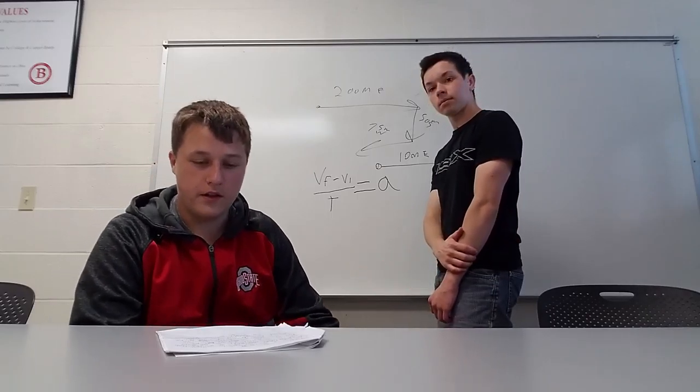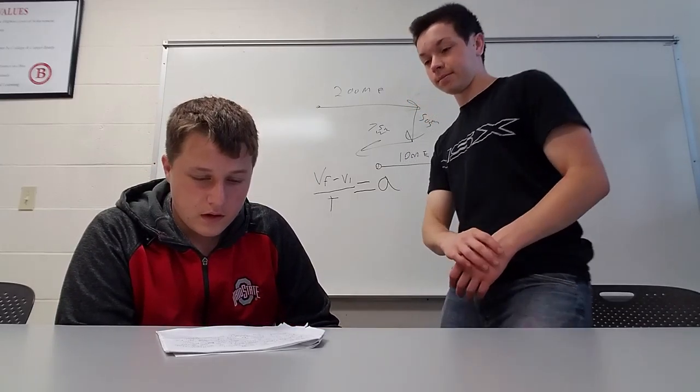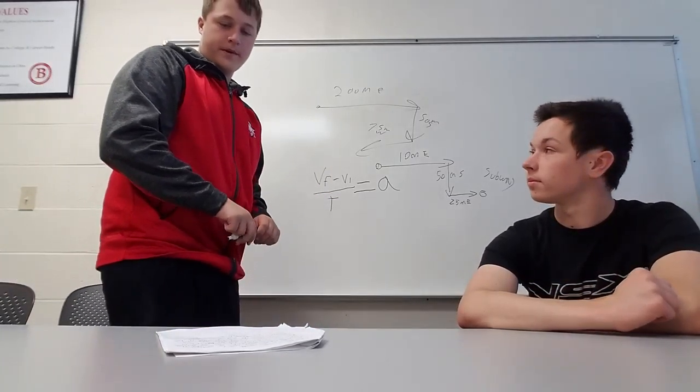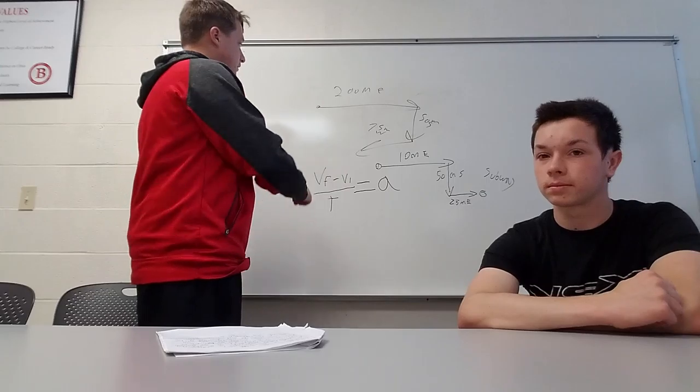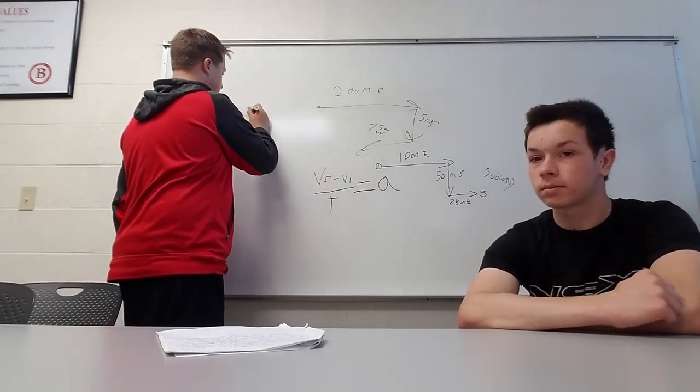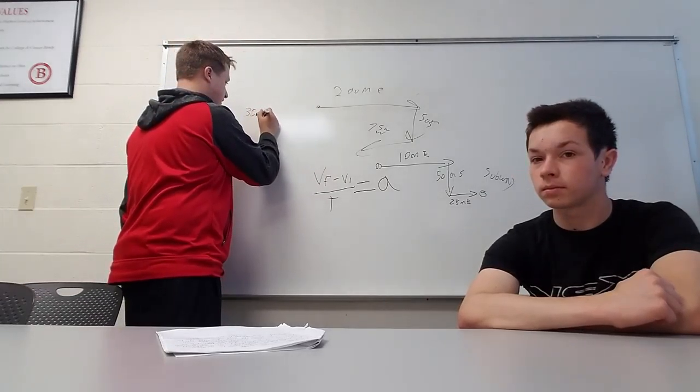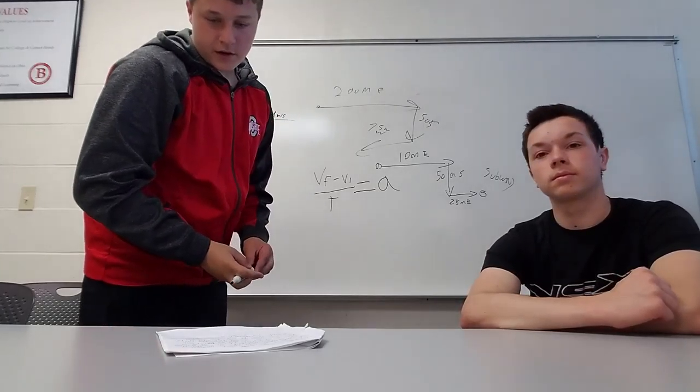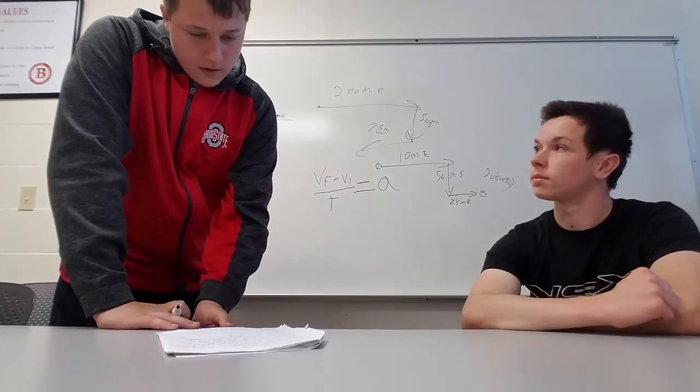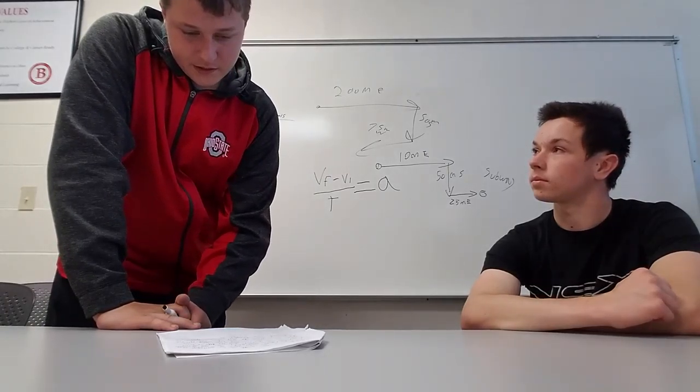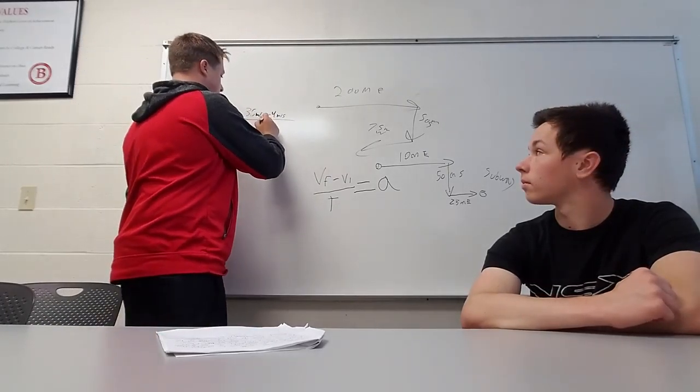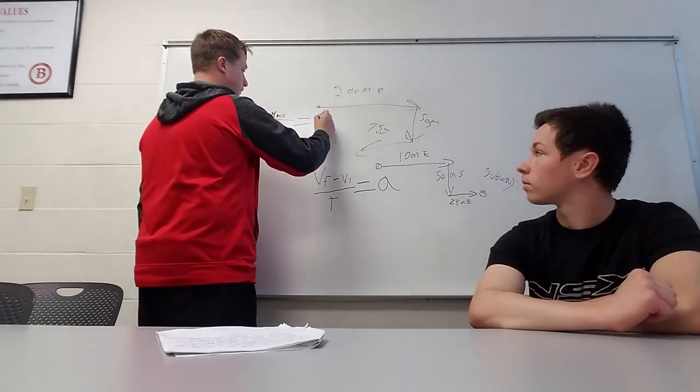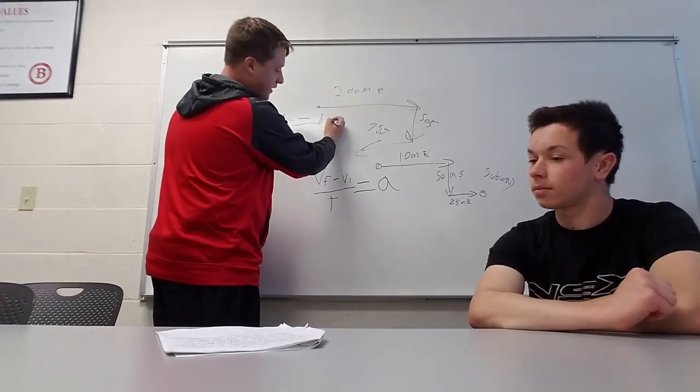Now we're going to do another problem for acceleration. It's an IndyCar. The velocity increases from 4 meters to 36 meters per second. So you take 36 meters per second, subtract 4 meters per second from it. And then it took 4 seconds to do that. So then you divide it by 4. And that gives you an acceleration of 8 meters per second squared.